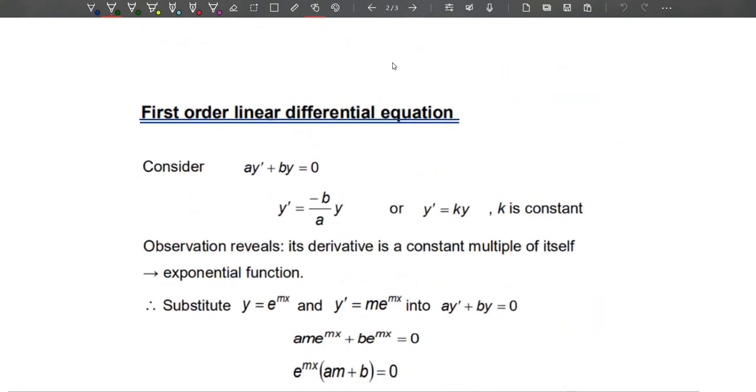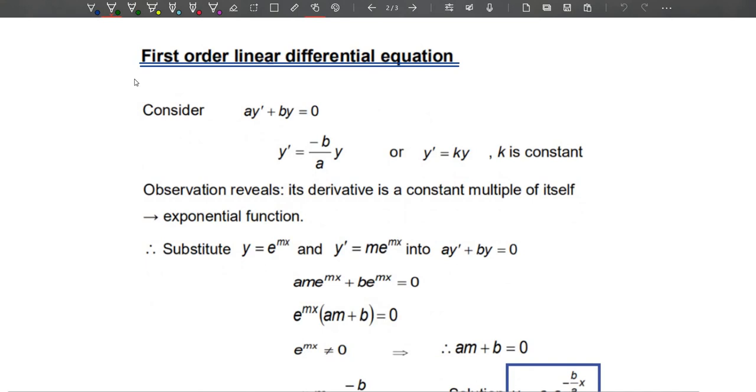Let's do a bit of review before we go further deep in this chapter. The first one is on first-order linear differential equation. Consider ay' + by = 0, which means it can also be written as y' equals negative b over a times y.